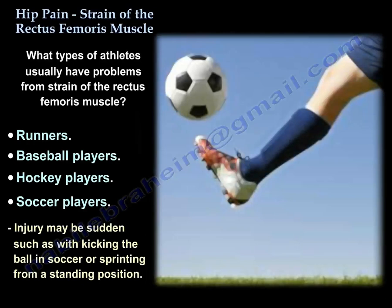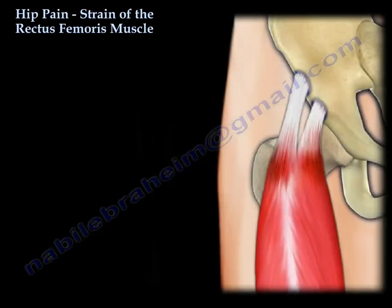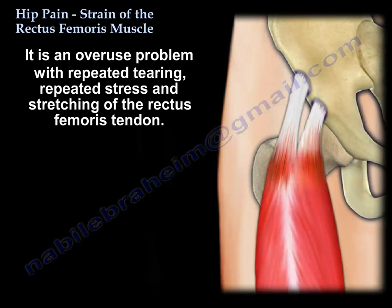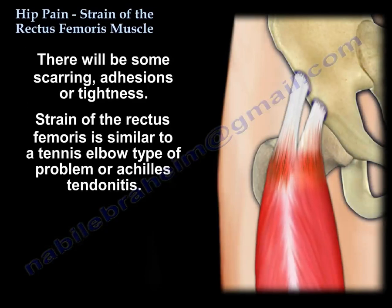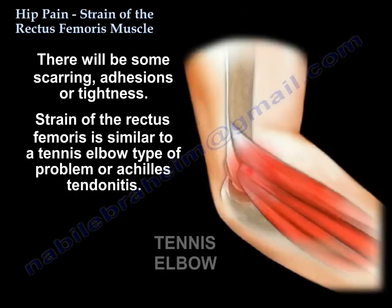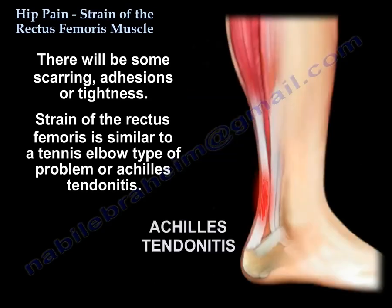The injury can be sudden, like kicking a ball in soccer or sprinting from a standing position. It is also an overuse problem with repeated tearing and repeated stress and stretching of the tendon, creating scars, adhesions, and tightness — almost like tennis elbow or Achilles tendonitis.